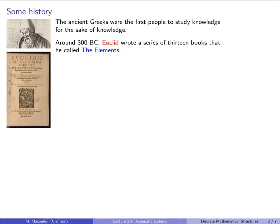Around 300 BC, Euclid, who's pictured up here, wrote a series of 13 books that he called The Elements. This is a collection of definitions, axioms, and theorems on geometry, number theory, and so-called geometric algebra.